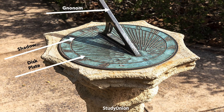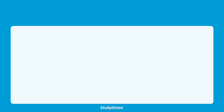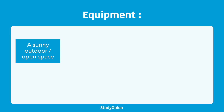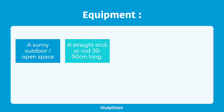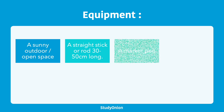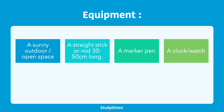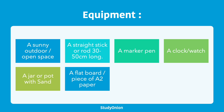Let's take a look at the equipment you need to perform the shadow stick experiment. Firstly, you'll need a sunny outdoor space — this can be a park or a garden. Next, you'd need a straight stick or rod that's not too long, maybe about 30 to 50 centimetres. You should also have a marker pen, a watch, clock, or phone to measure the time, a jar or pot filled with sand to keep the stick upright, and a flat piece of A2 paper or a board to put markings on of how long the shadow was.